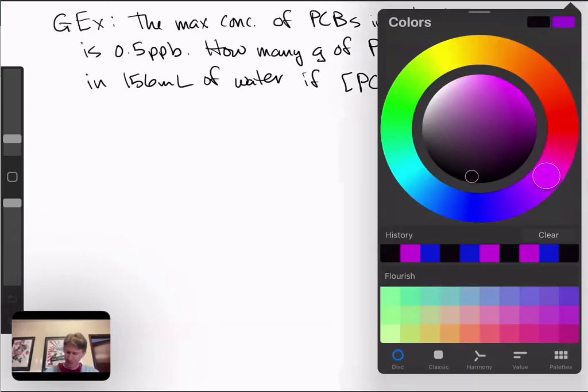We're always going to start by translating 0.5, whatever our parts per billion is, into 0.5 times 10 to the minus 9, and that 9 comes from billion. So if you get 0.5 parts per million,